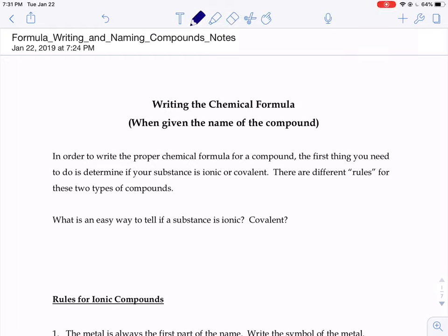Today we're going to be looking at how to write the chemical formula for a compound if you're given its name. There's one set of rules for ionic compounds and one set of rules for covalent compounds. So that's the first decision you have to make is to decide what type of compound is it.